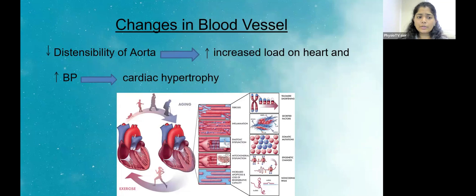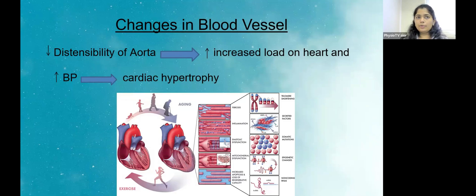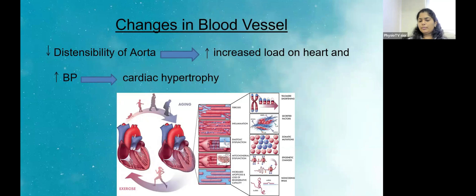Reduced distensibility of the aorta increases the load on the left ventricle because blood is not being passed from it efficiently, no matter how hard it is pumping. This increased blood pressure leads to cardiac hypertrophy due to backflow — the left ventricle has to beat harder and harder, eventually causing muscle hypertrophy, which further increases BP. This is the reason we usually see hypertension as a comorbidity associated with the elderly.